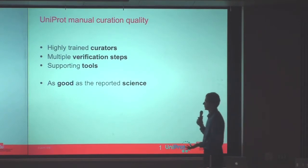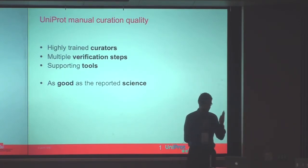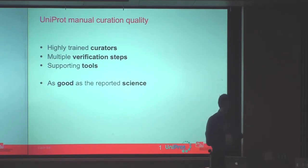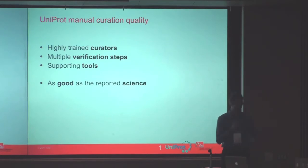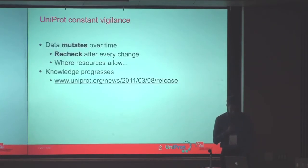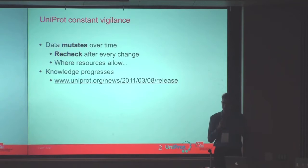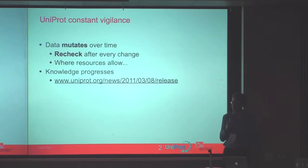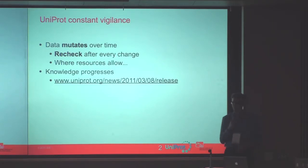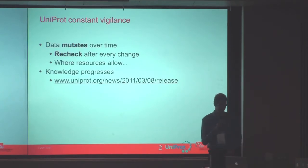We use highly trained curators and many steps in our process to ensure integrated data is correct, using very high quality supporting tools. We aim to be as good as the science and the literature. We have to maintain and follow all changes in biology because data mutates — information about something changes, so we recheck all the time. Sometimes you find that the original literature was completely wrong: something was thought to be A but actually was Z.